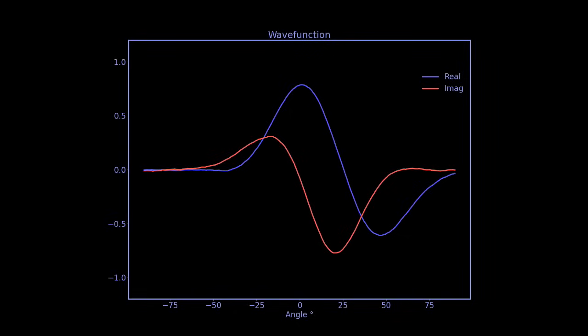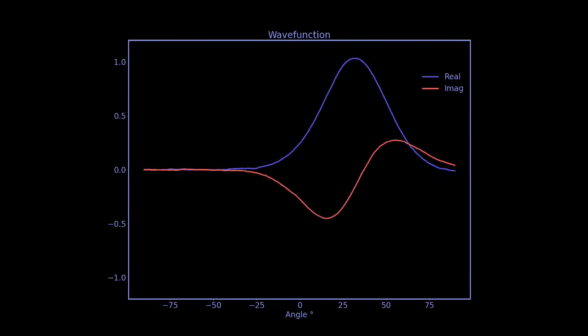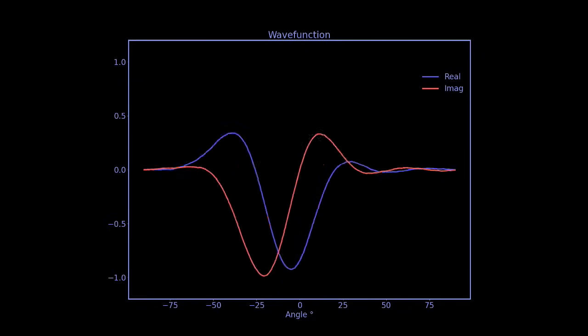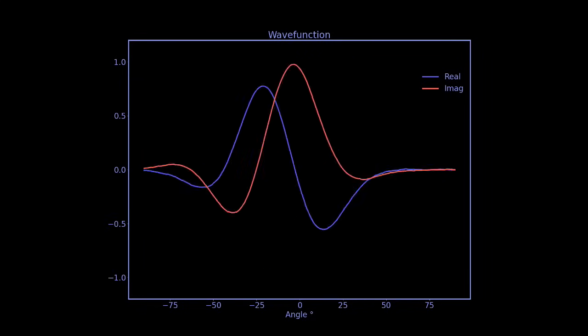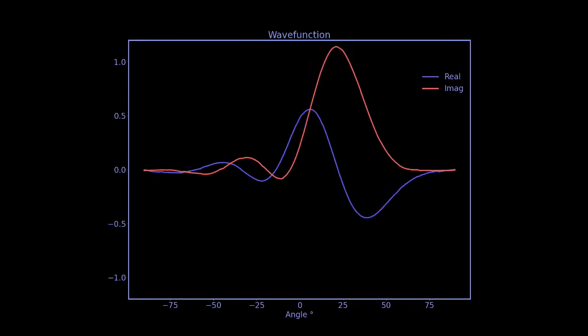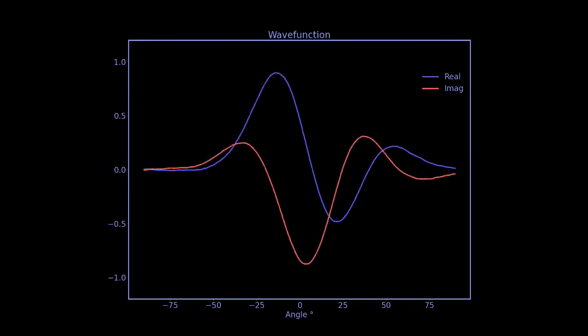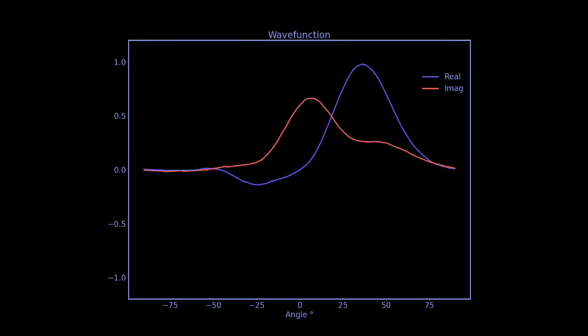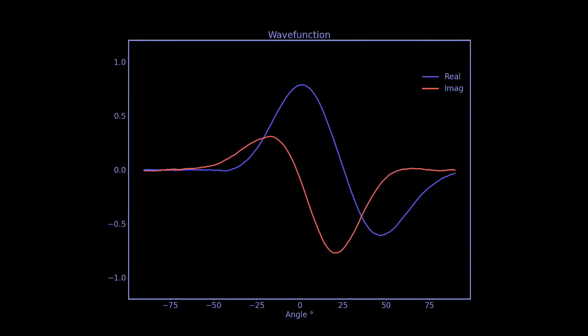Note that there are two curves here. That's because the wave function at every point has two components. Physicists refer to these as the real component and the imaginary component, but these are just labels. If you're familiar with complex numbers, the wave function is a complex number at every point. Otherwise, just remember that the wave function has two components.